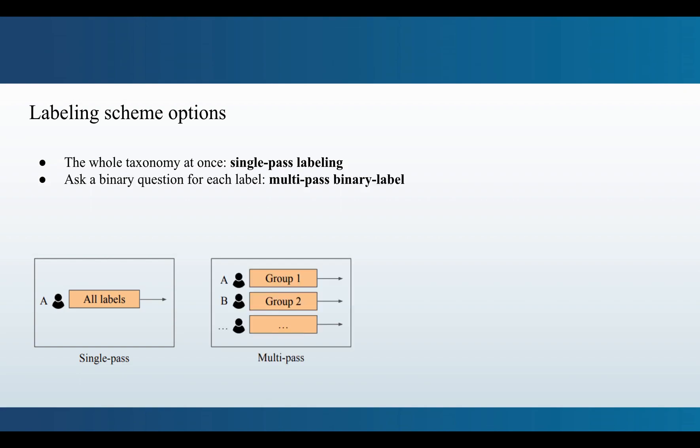One option is binary labeling where we show annotators a passage and ask a single binary question of whether let's say 3.2 on the taxonomy, harmful ingredients, should that be selected. And then we ask another question like that for the next label on the taxonomy and so on. And this becomes prohibitively expensive fairly quickly since annotators will very often see negative examples and they're forced to read through the text several times.